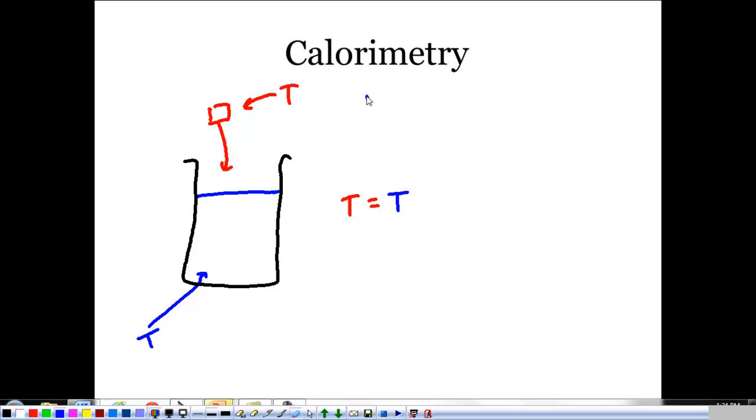And what we see is a big delta T for the metal and a smaller delta T for the water because of the differences in specific heat.